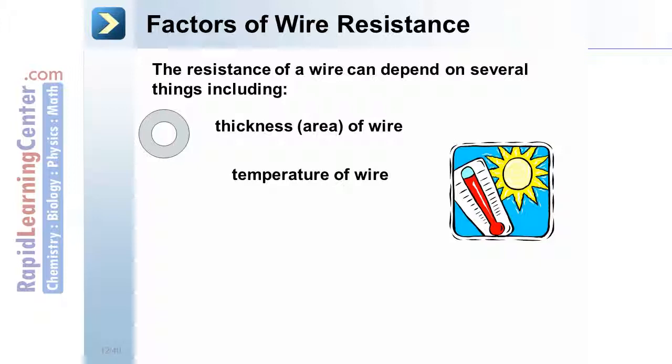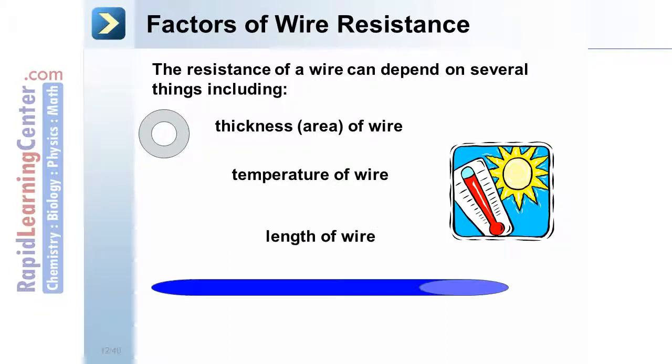Temperature of a wire. A hot wire has more resistance, while a cool wire with very slow-moving atoms has a lower resistance. And the length of a wire. A longer length of wire for electrons to travel through provides more resistance.